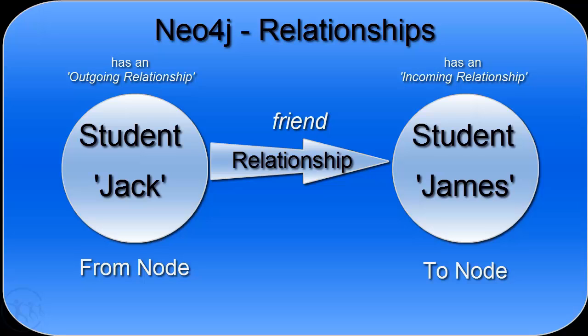In the diagram, you'll notice that the relationship has an arrow on it, which marks the direction of the relationship. The Cypher syntax is very human-readable and easy to pick up, as shown by the syntax used to indicate a relationship. Each relationship contains two nodes: a from node and a to node. Student Jack is the from node, and student James is the to node in this particular relationship.